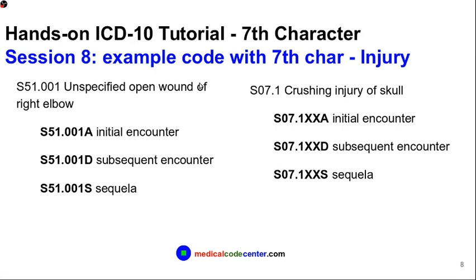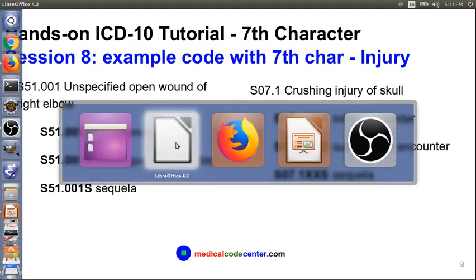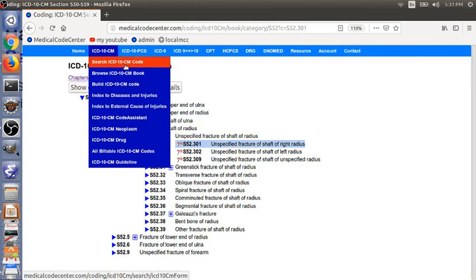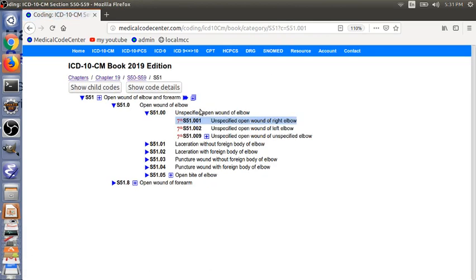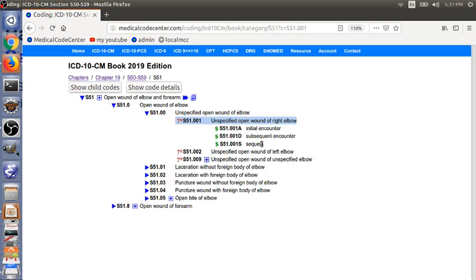Now let's go through examples of codes needing a 7th character. The first category is injury codes — whenever you have an injury code, remember to check whether a 7th character is needed. Please use your code book. Let's find the code S51.001, unspecified open wound of the right elbow. Click the book icon to go to the tabular list. You'll see the 7th character reminder — click it and you get S51.001A for initial encounter.